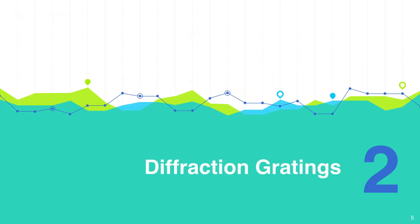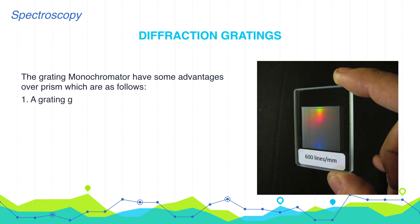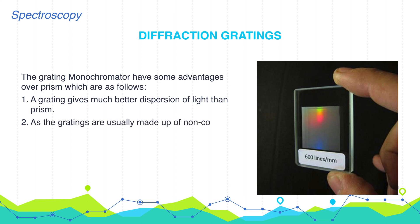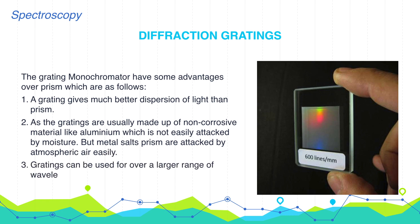Let's talk about diffraction gratings. The grating monochromator has some advantages over the prism. A grating gives much better dispersion of light than a prism. Gratings are usually made up of non-corrosive materials like aluminium, which is not easily attacked by moisture, whereas metal salt prisms are attacked by atmospheric air easily. Gratings can also be used over a longer range of wavelengths compared to prisms.